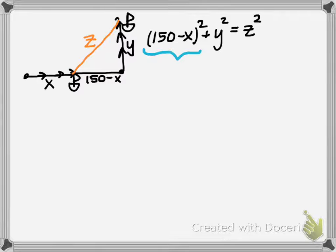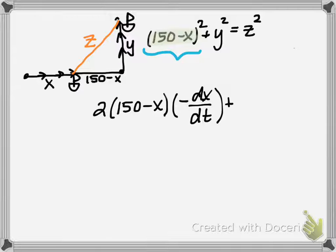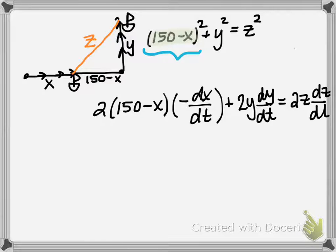The first portion is a composite function, so we use the chain rule. Taking the derivative with respect to time: first the power rule brings a 2 in front, leaving the quantity (150 − x) to the first power, then the chain rule gives us the derivative of the inner function — the derivative of 150 is 0 and the derivative of negative x is negative dx/dt. This is implicit differentiation. Plus the derivative of y² with respect to time gives 2y · dy/dt, and that equals 2z · dz/dt.